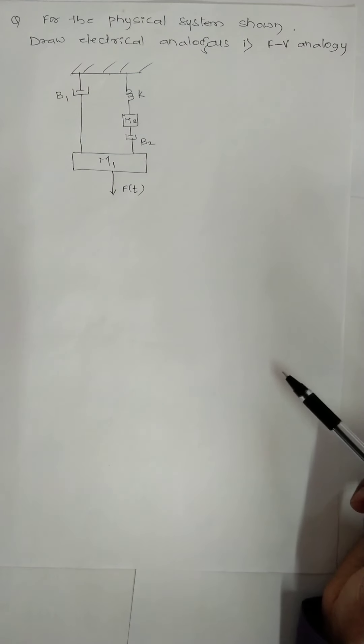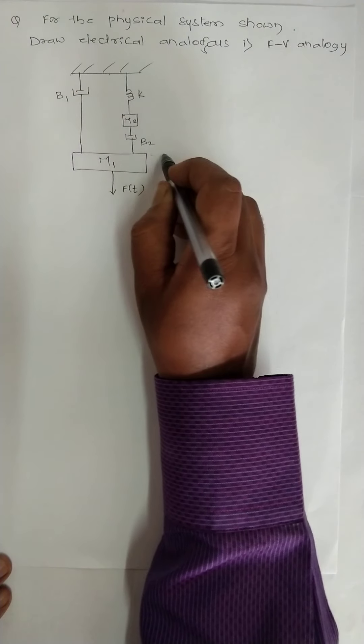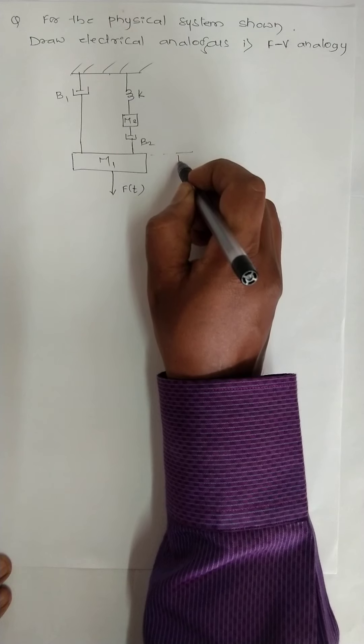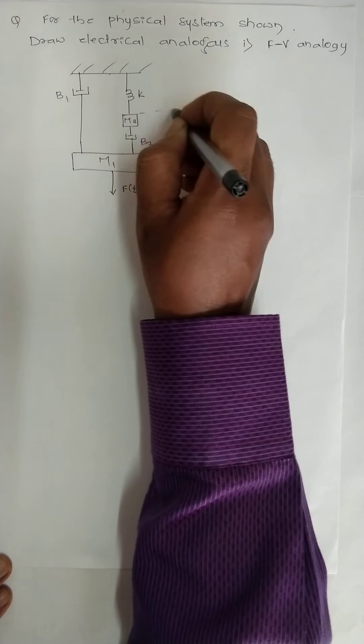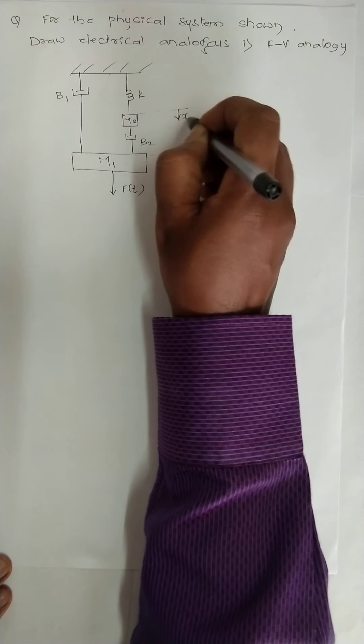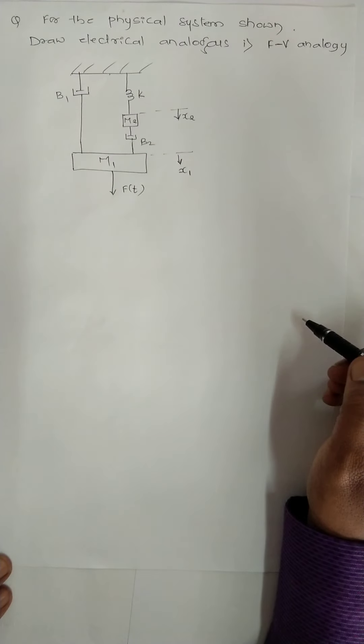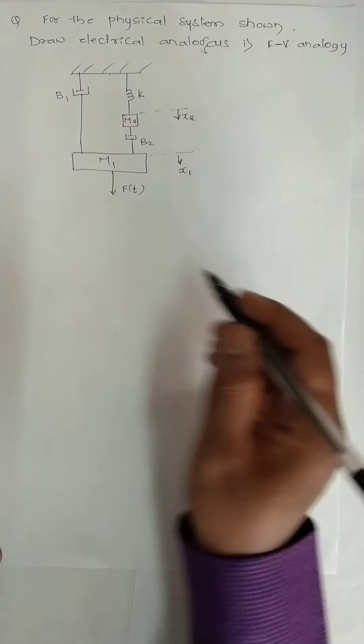We need to draw the equivalent circuit - that is the first step. Before drawing the equivalent circuit, first we need to put the displacement. Displacement usually will be for mass x1, another mass is there so I will mention it as x2. We have two masses, so two displacements are there.